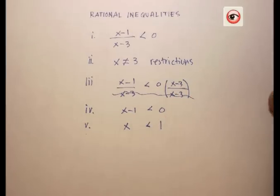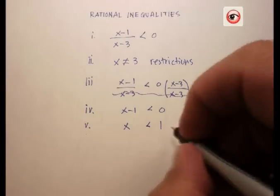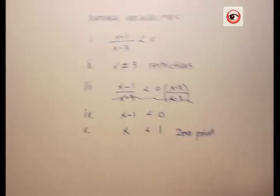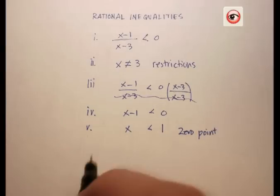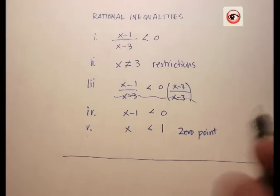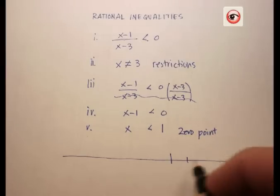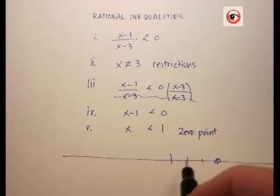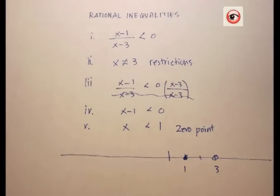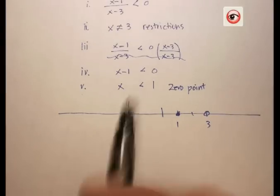What does that mean? The restriction and the zero point both go on my x-axis. According to this, I'll make that my zero. X cannot equal three, so one, two, three. X is going to be less than one, which is right there. One and three.